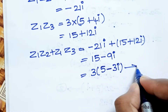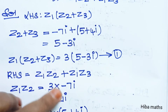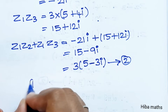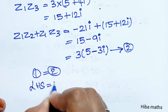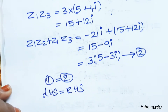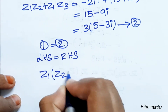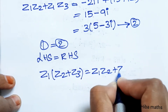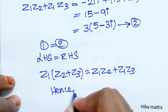The second result ends with minus 9i. So this is the second result. The first result is 3 into (5 minus 3i). From this, equation 1 equals equation 2. LHS is equal to RHS. Therefore z1 into (z2 plus z3) is equal to z1·z2 plus z1·z3. Hence proved.